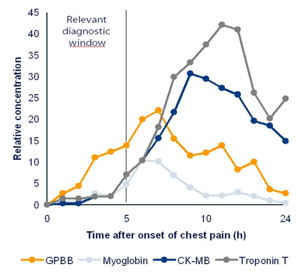The widespread use of the term biomarker dates back to as early as 1980. The term biological marker was introduced in the 1950s. In 1998, the National Institutes of Health Biomarkers Definitions Working Group defined a biomarker as a characteristic that is objectively measured and evaluated as an indicator of normal biological processes, pathogenic processes, or pharmacologic responses to a therapeutic intervention.